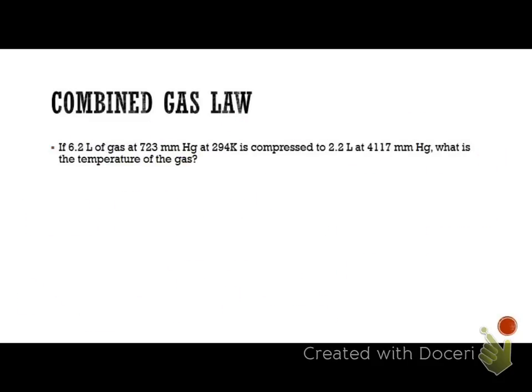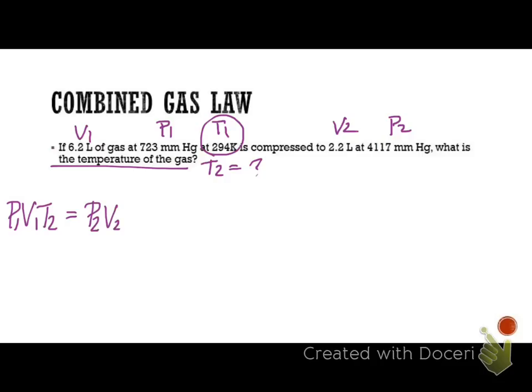Next one is 6.2 liters of gas, so that's going to be our volume, V1. T1 at 723, that's going to be P1, and 294 K, T1. And it's compressed to 2.2, so that's V2, and a pressure of 4,117. What is the new temperature? So we're going to be looking for T2. We don't need to convert Kelvin, because it's already in there. So again, P1, V1, T2 equals P2, V2, T1. So this time we're solving for T2.